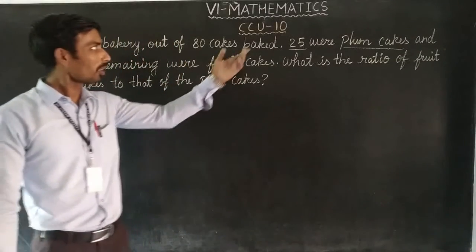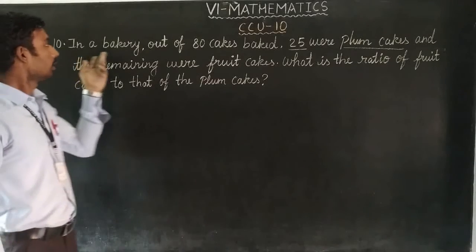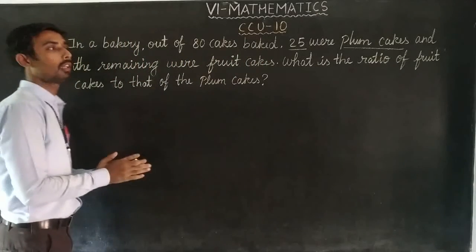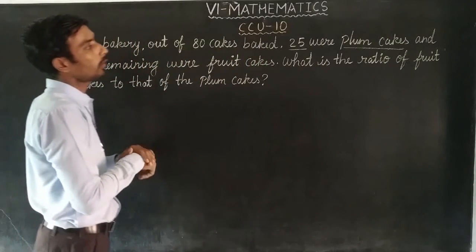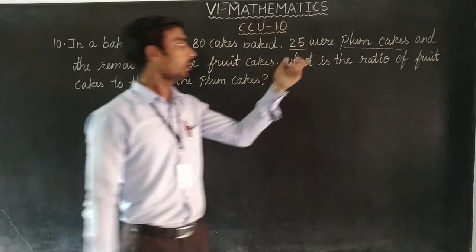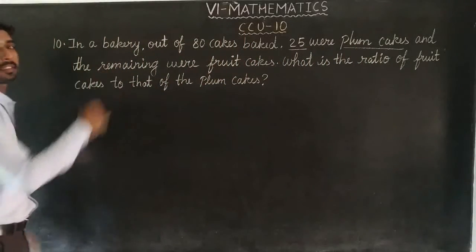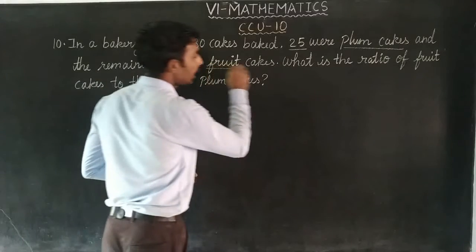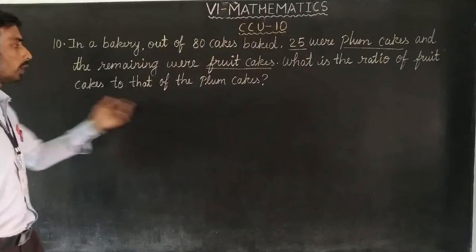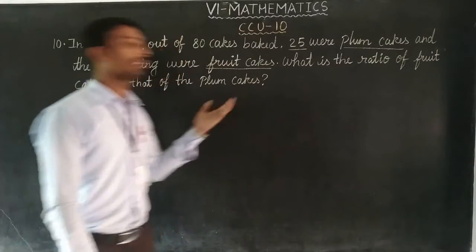Dear students, we are going to do chapter 10, tenths of barcode. We are going to do bagging: out of 80 cakes, 25 are plum cakes, and the remaining are fruit cakes. What is the ratio of fruit cakes to that of the plum cakes?